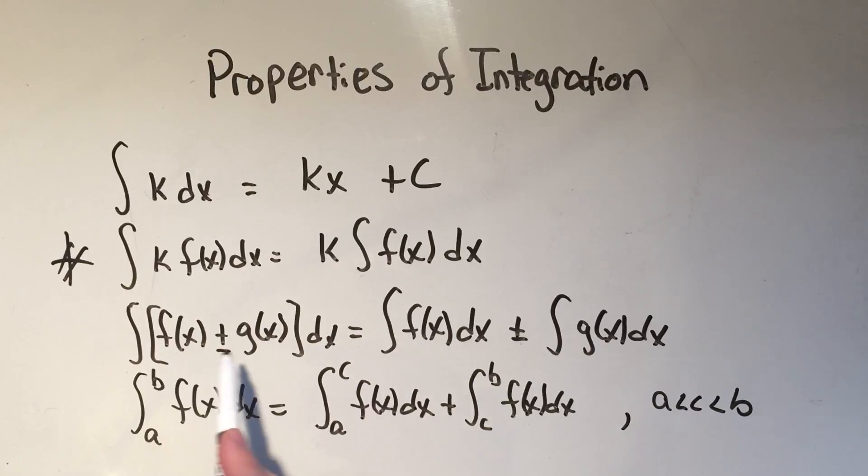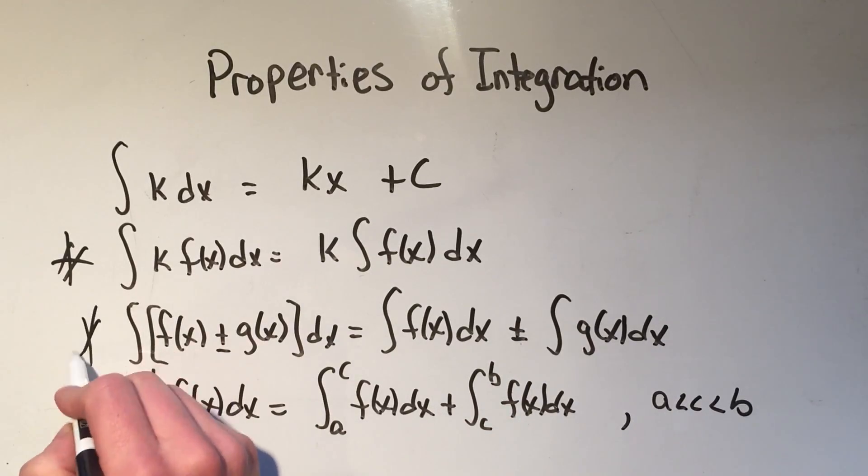If I have the integral of a function plus a function or a function minus a function, I'm allowed to split that up between two different integrals. So I could integrate the first and then add integral of the second. I'm going to give that one a star too. That one's pretty good.